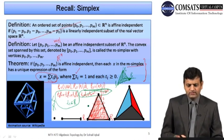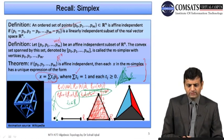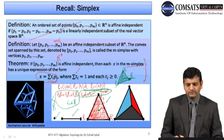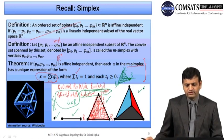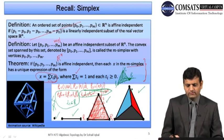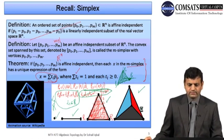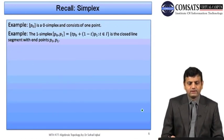A zero simplex is just one point. A one simplex is generated by two points. A two simplex is generated by three points, and a three simplex is generated by four points. A typical example of a three simplex is a tetrahedron.